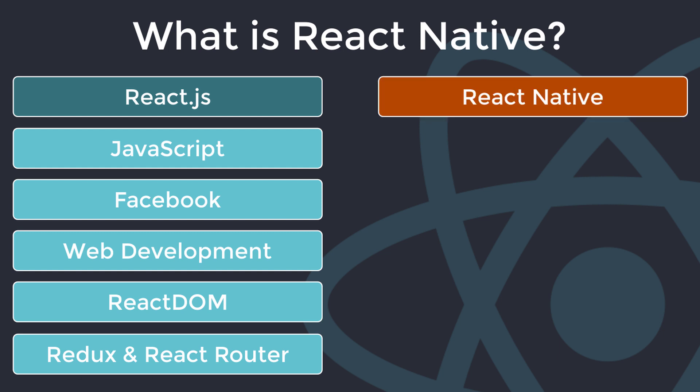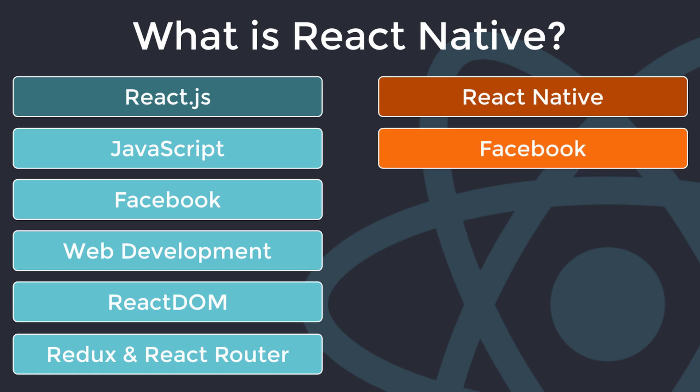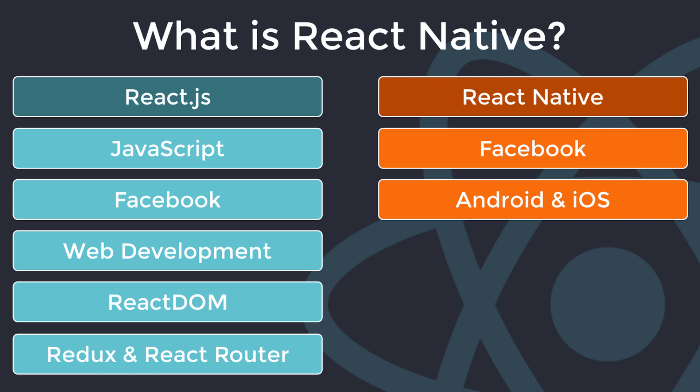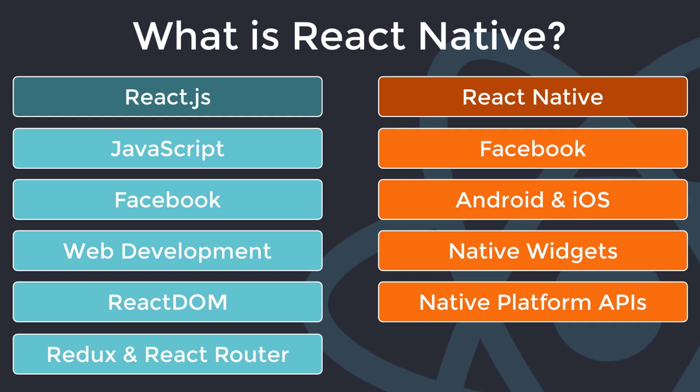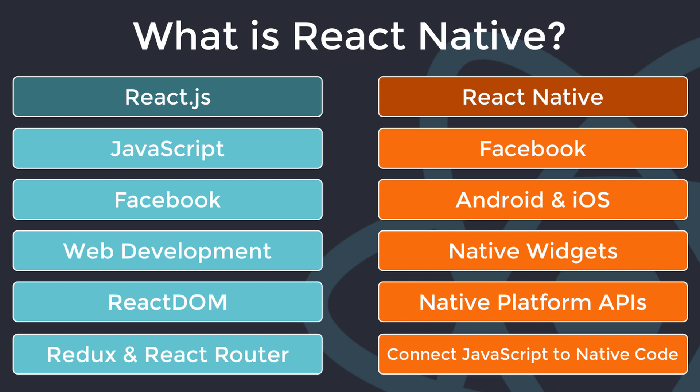React Native is an open-source mobile application framework created by Facebook. It is used to develop applications for Android and iOS by enabling developers to use the React framework aligned with native platform capabilities. React Native knows how to talk to the native platform — Android and iOS — and how to render native widgets. It gives you a bunch of these widgets as React components so that you can build a user interface with them. React Native also gives you access to some native platform APIs; for example, it helps you use the device camera and gives you tools to connect JavaScript code to native platform code.